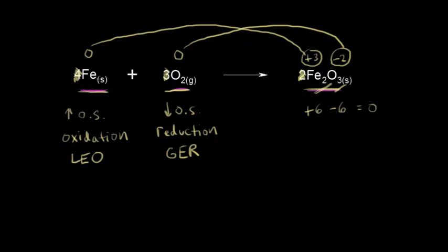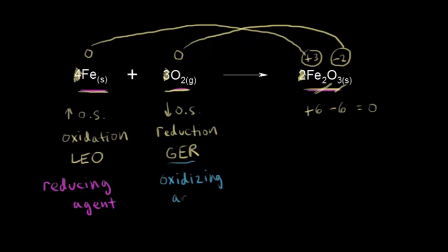Iron, by losing electrons, is allowing oxygen to be reduced. So iron is the agent for the reduction of oxygen — iron is the reducing agent. Thinking about it the other way: oxygen is gaining electrons from iron, so oxygen is allowing iron to be oxidized. Oxygen is the agent for the oxidation of iron, and therefore oxygen is the oxidizing agent.